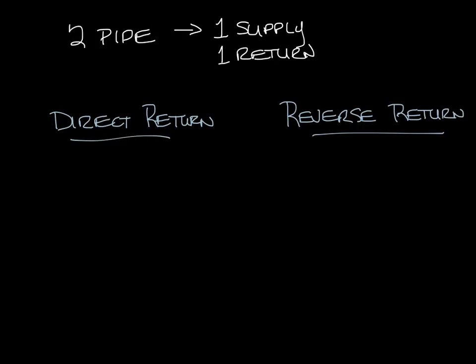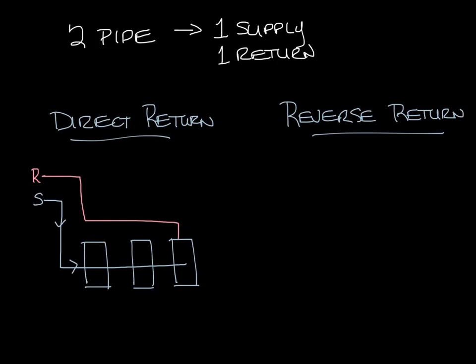In a direct return system the return piping takes the shortest path back to the chiller or boiler. It looks kind of like this. So let's say you have three hydronic units. Maybe they're fan coils, maybe they're chilled beams. And your supply is coming in over here. So it'll go from the first unit to the second to the third. In a direct return system the return takes the shortest path back.